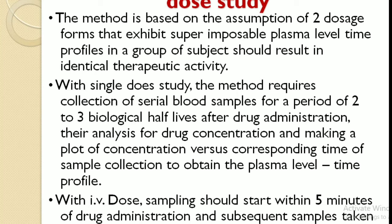The plasma level time study — single dose study — is based on the assumption that two dosage forms exhibiting superimposable plasma level time profiles in a group of subjects should result in identical therapeutic activity. The method requires collection of serial blood samples for a period of two or three biological half-lives after the drug is administered, followed by analysis for drug concentration and plotting concentration versus time to obtain the plasma level time profile. For IV dose, sampling should start within 5 minutes of drug administration and subsequently at 15-minute intervals, since the drug is given directly into the blood.